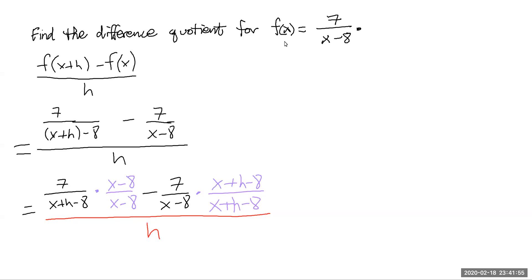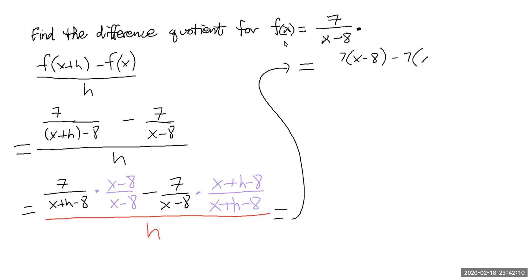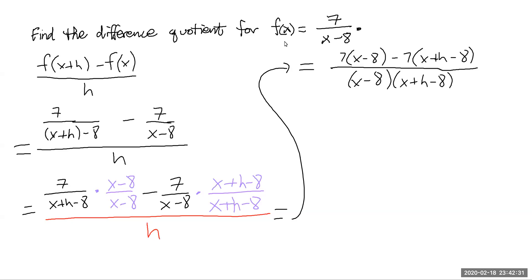Now we just keep working through the problem. We have 7 times the quantity x minus 8, minus 7 times the quantity x plus h minus 8. Now divide by h — remember, that means multiply by 1 over h.